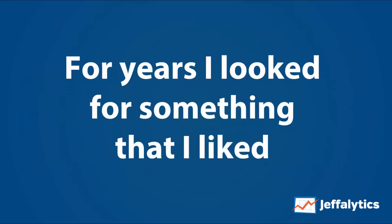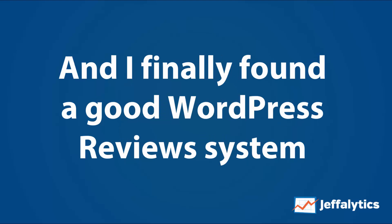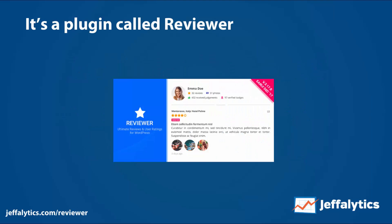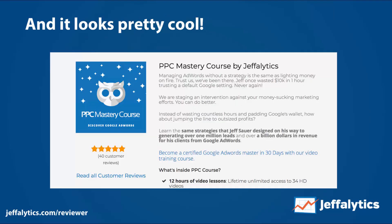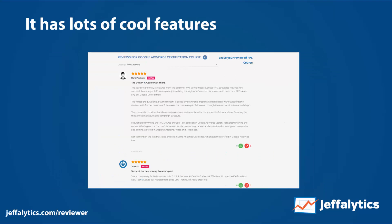For years I searched for something I actually liked, and I finally found a good WordPress plugin called Reviewer. You can look at it at jefflytics.com/reviewer. This is my new template for my product page — I have full customization over it because I'm not using the WooCommerce one. I use a shortcode to display the ratings, and there's a link to read all customer reviews. It displays the most recent review first, you can give it a thumbs up or thumbs down, it has titles, people are more inclined to put their picture in — it just looks great.